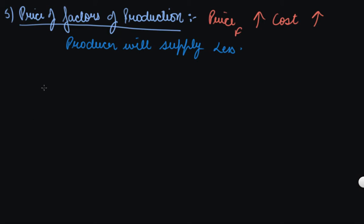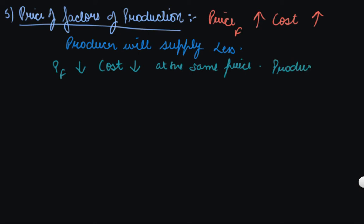If the price of factors of production decreases, your cost decreases. At the same price, your profit will be more, so the producer will supply more. This is how the price of factors of production affects supply.